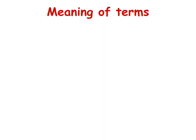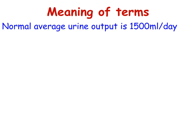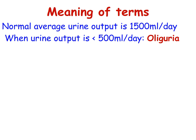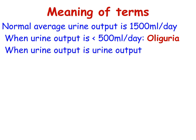Let us look at the meaning of some terms. Normal average urine output is around 1500 milliliters per day. Oliguria is when the urine output is less than 500 ml per day. Polyuria is urine output more than 3000 to 3500 milliliters per day.